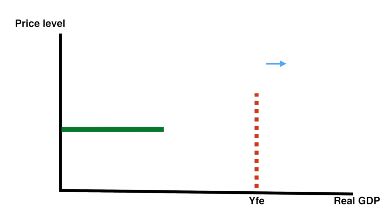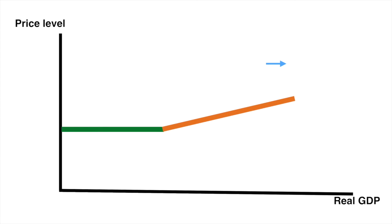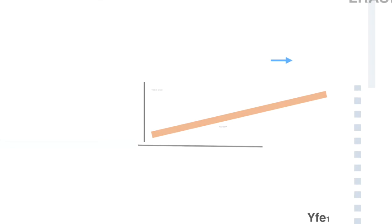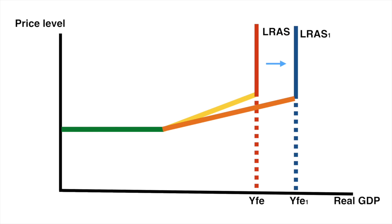So you'll see the original LRAS at full employment shift outward to our new level of full employment, YFE1, represented by the blue vertical LRAS1. Here they are side-by-side and you can see that the potential output has increased.